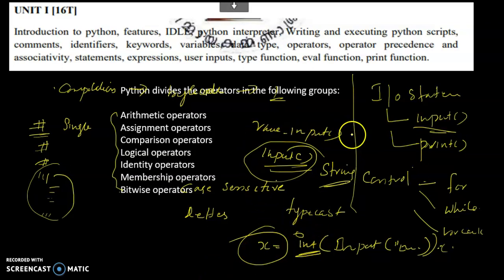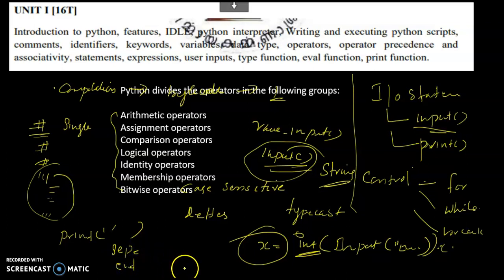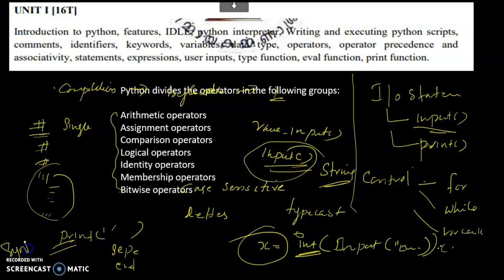Next is the print() function. There is a format for print. If you want to print simply, use print. You can use a separator and an end character. There is also the important type() function — if you want to print the type of a variable, we can use the type() function. Then there is the eval() function. These three functions — input(), type(), and eval() — are important.